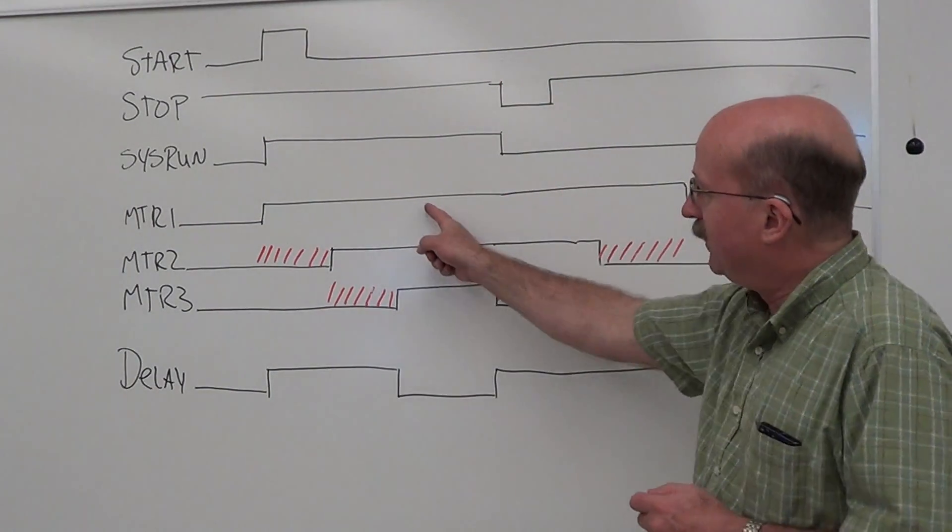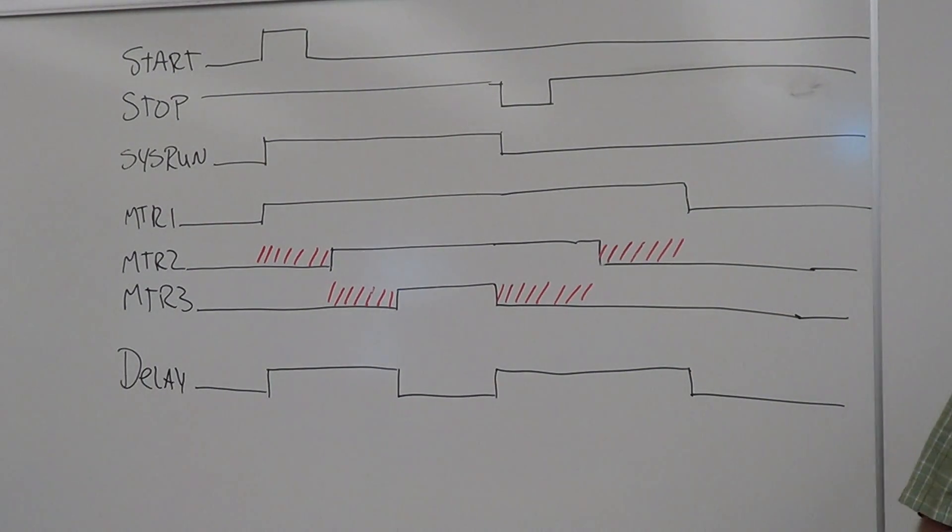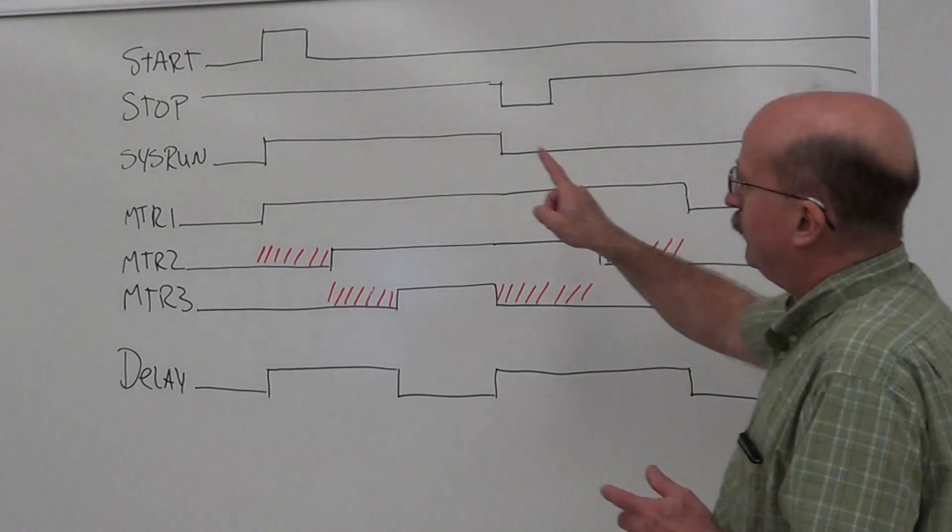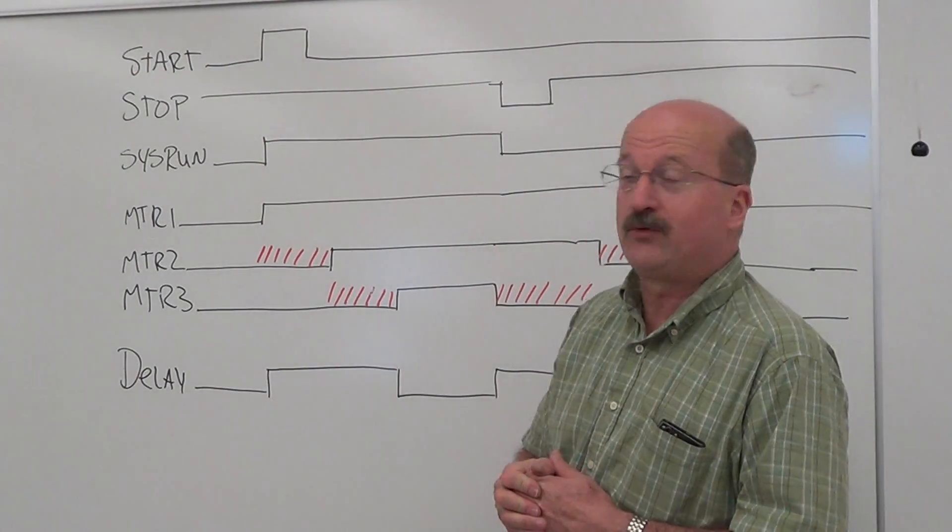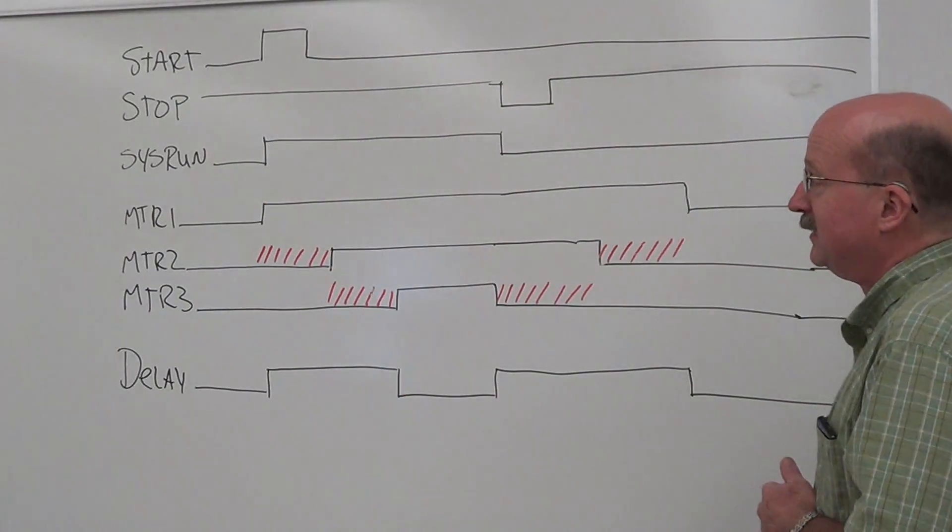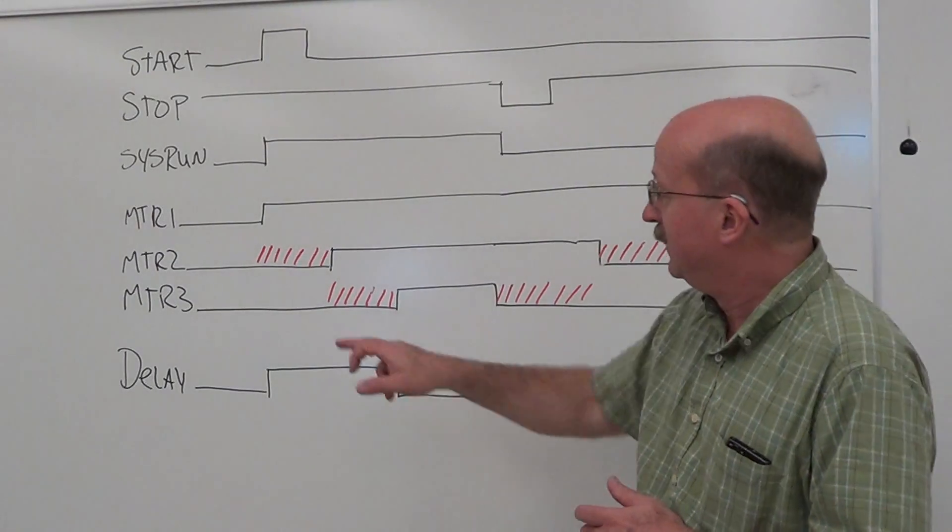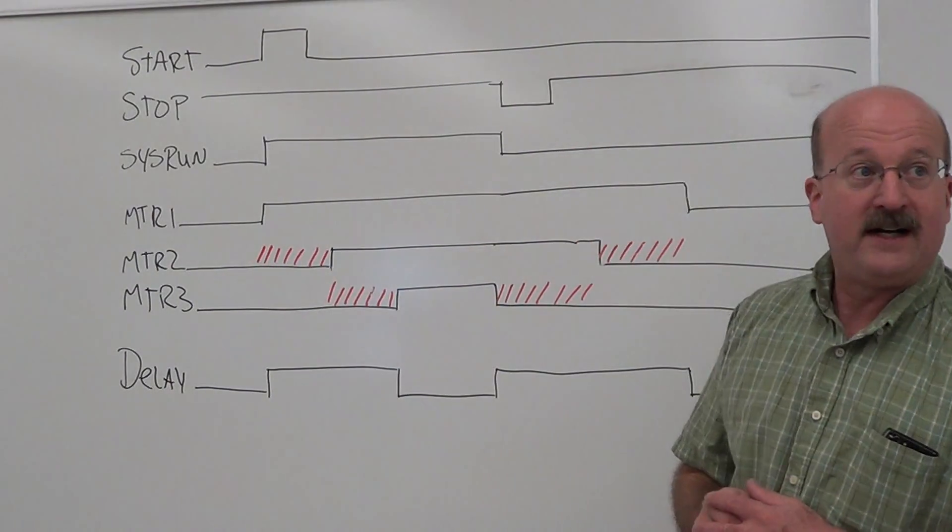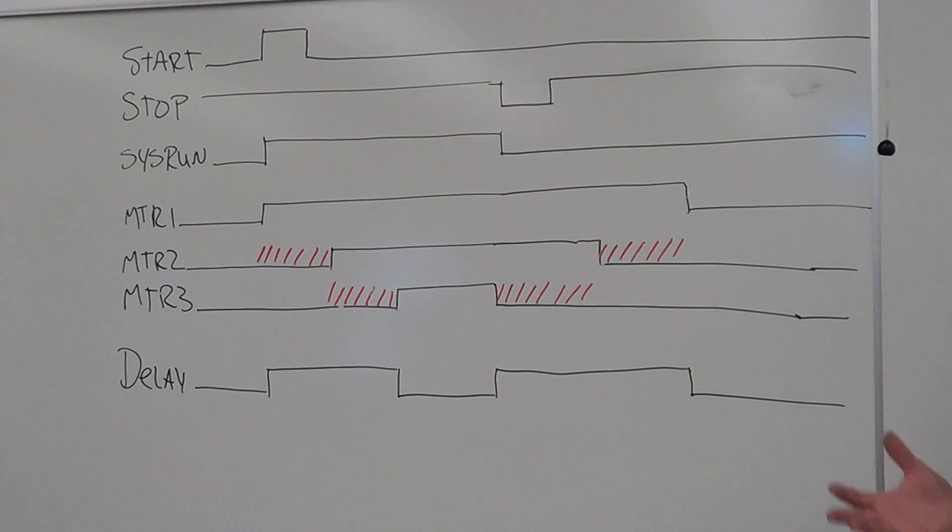We've got our start button and our stop button, we've got our three motors, and you have your delay indicator. So push the start button. We have our internal coil sys run which turns high and starts the whole sequence. Motor one turns on immediately.